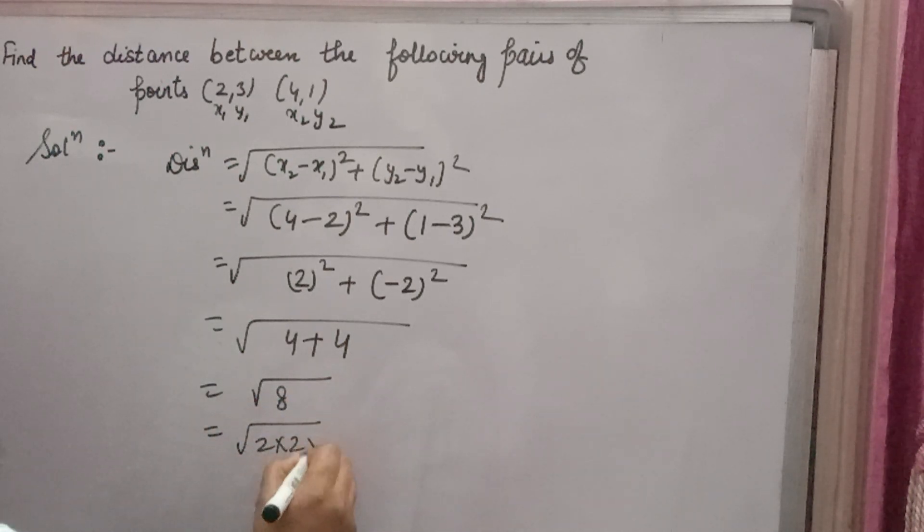8 you can write as 2 times 2 times 2. Now you can do pairing and take out 2 root 2.